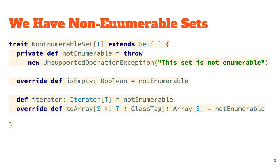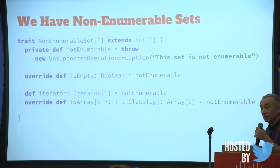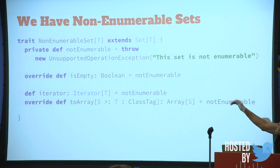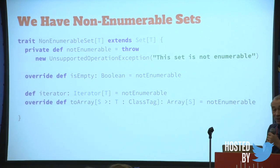A non-enumerable set in Scala puts us in an interesting situation. What's the 'head' of such a set — is it the axiom of choice automatically providing the first element even of an empty set? Not here. Anything that causes an attempt to enumerate will throw. Is it empty? We don't know. Can we compare them? No. The iterator throws 'not enumerable' — you cannot enumerate real numbers in Scala or Java, so 'toArray' also throws.